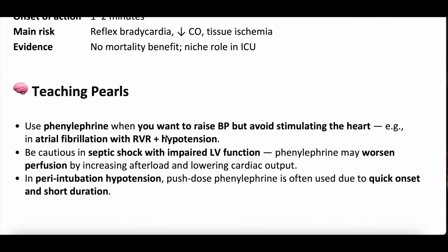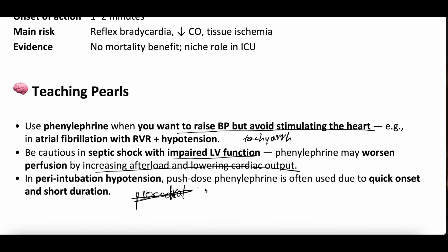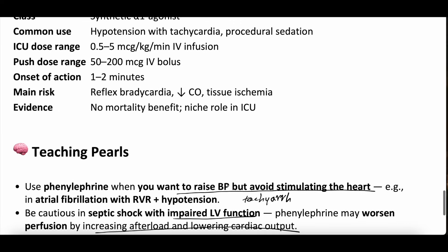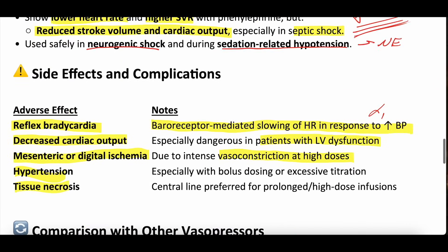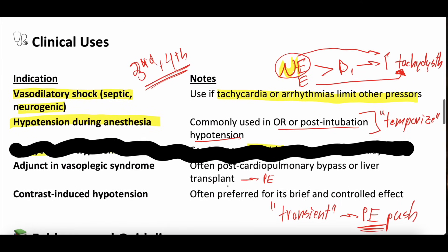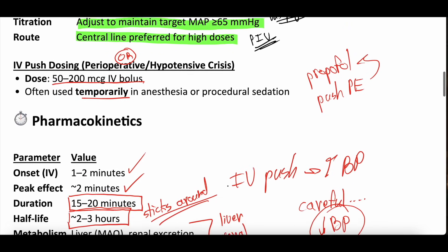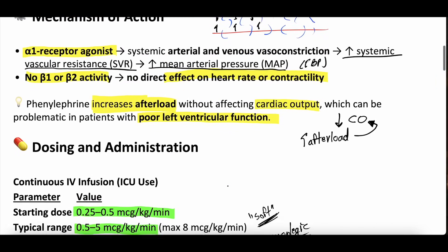Teaching pearls: consider using phenylephrine when you want to raise blood pressure but avoid stimulating the heart — tachyarrhythmias being one of those situations. Be cautious in septic shock with impaired left ventricular function, as phenylephrine may actually worsen perfusion by increasing afterload and decreasing cardiac output. For periprocedural or procedural sedation hypotension, push dose phenylephrine is often used for its quick onset to treat that transient hypotension. That's all we have for today — check out our Patreon page for the study guide and practice questions, our other videos, podcasts, and free newsletter. Stay well, keep learning, and we'll see you next time.